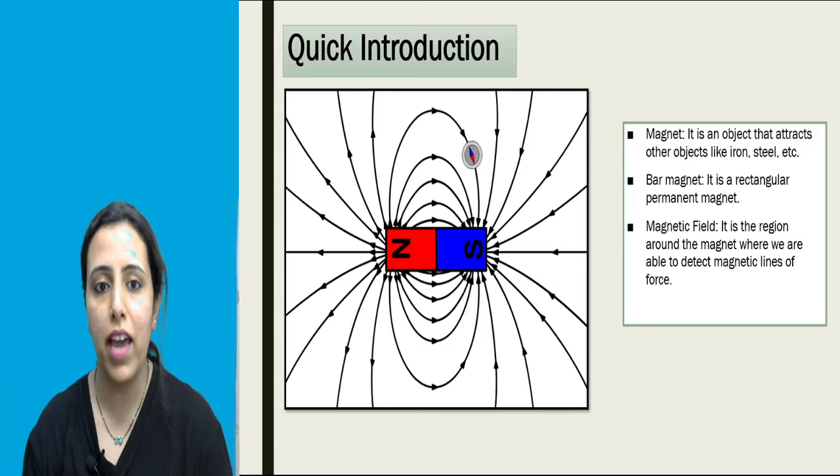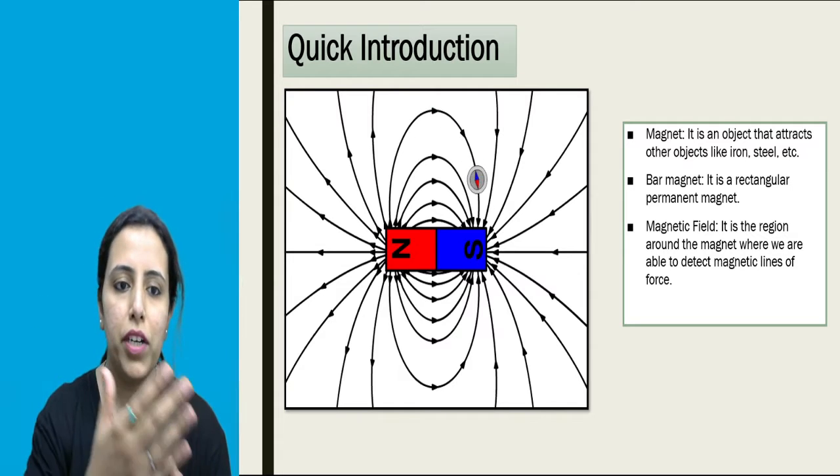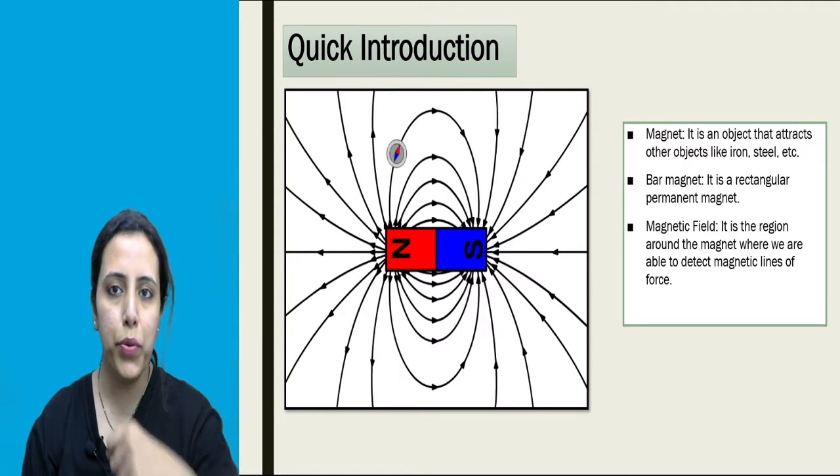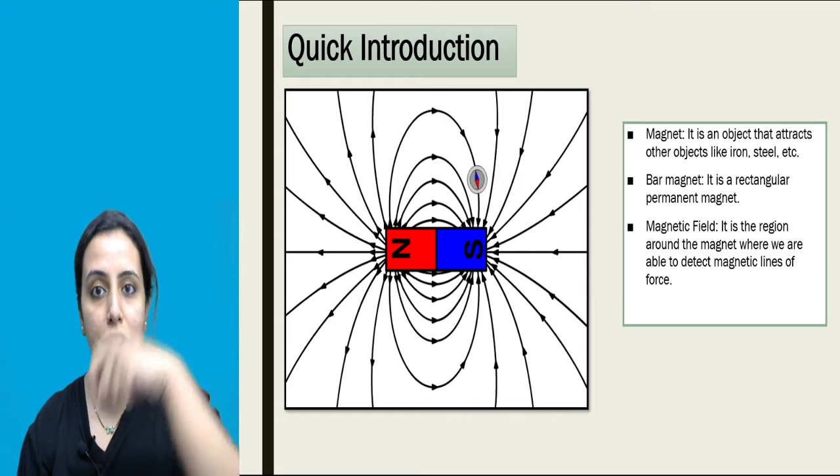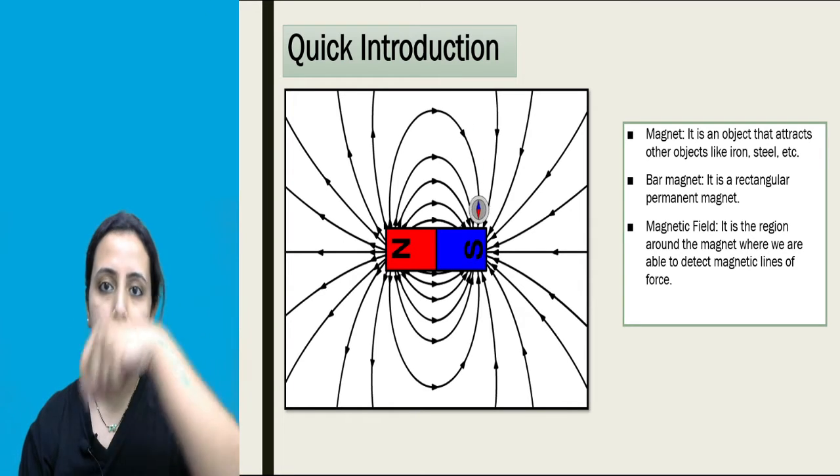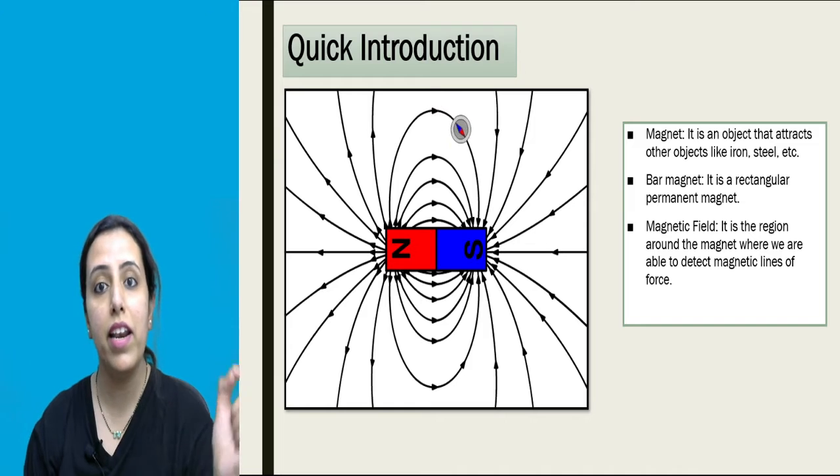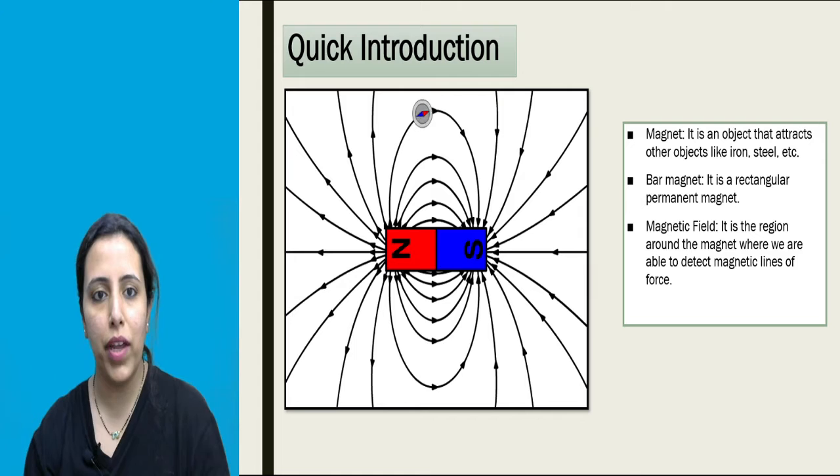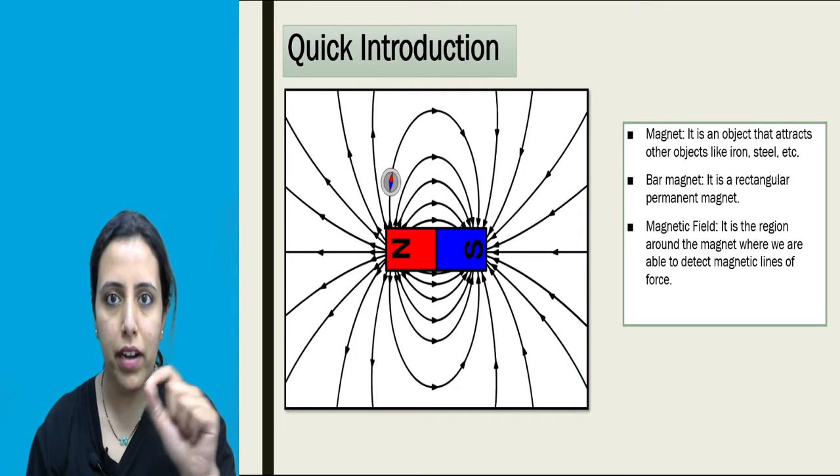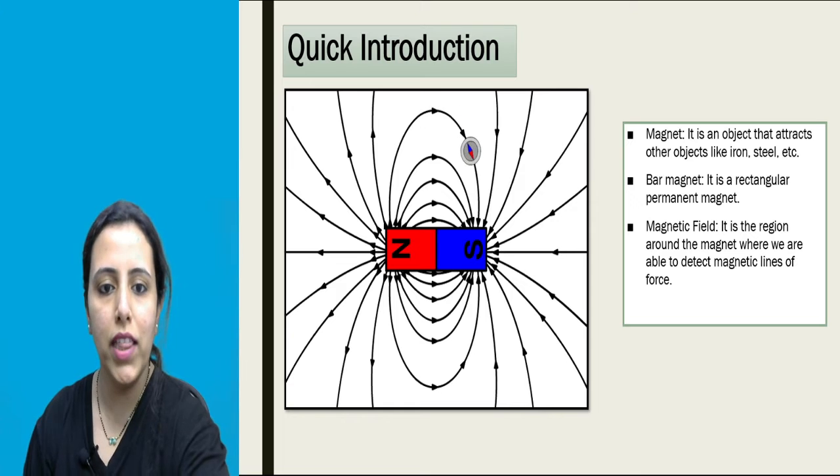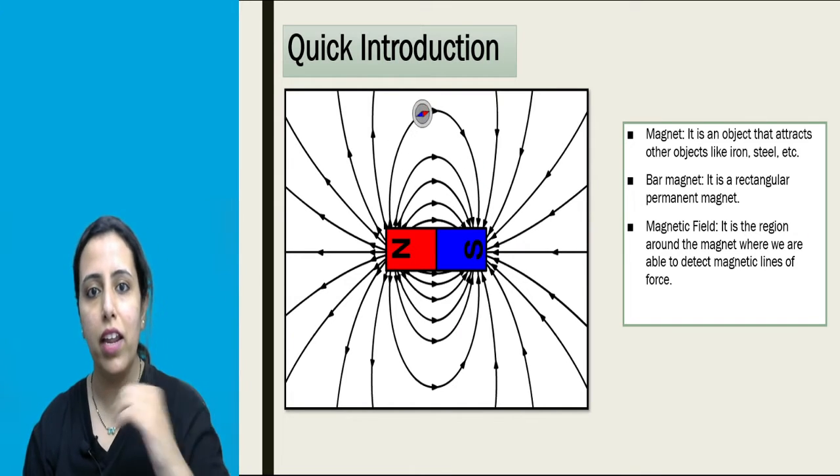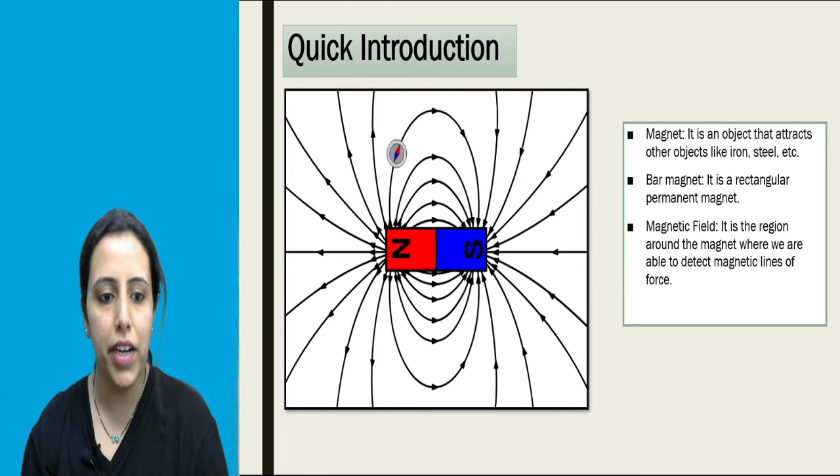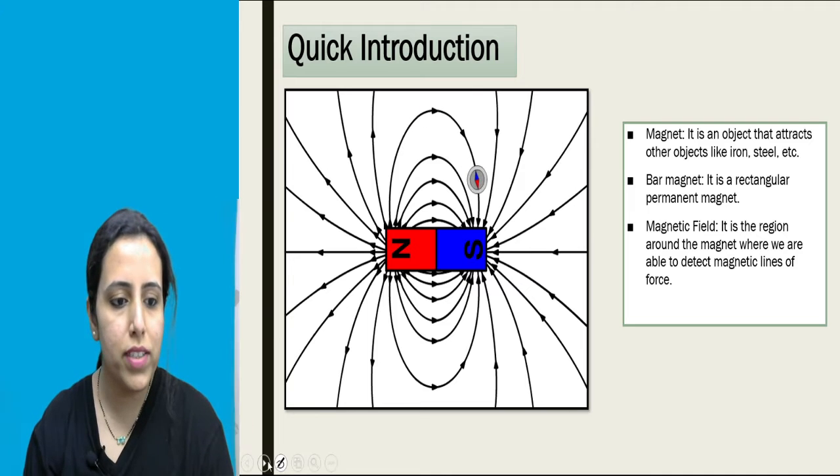We have magnetic lines of force here. In this particular diagram, you can see one pointer is moving from N towards S. This direction from N towards S, the entire direction is nothing but a line. That line is nothing but a magnetic line of force. You can see arrows as well. It is starting from the pole N and ending at S, and they are in the coil format.